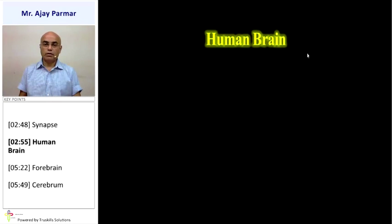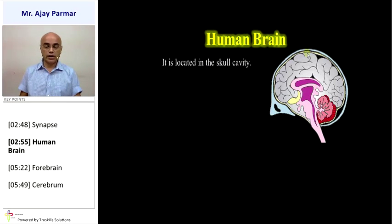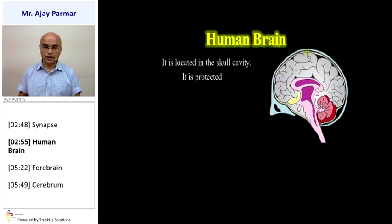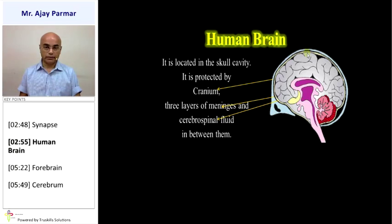The main center of the nervous system is obviously the brain. The brain is located in our skull cavity, also known as the cranium cavity. The outer region of this cranium cavity is composed of the bony structure called the cranium, which protects the brain.